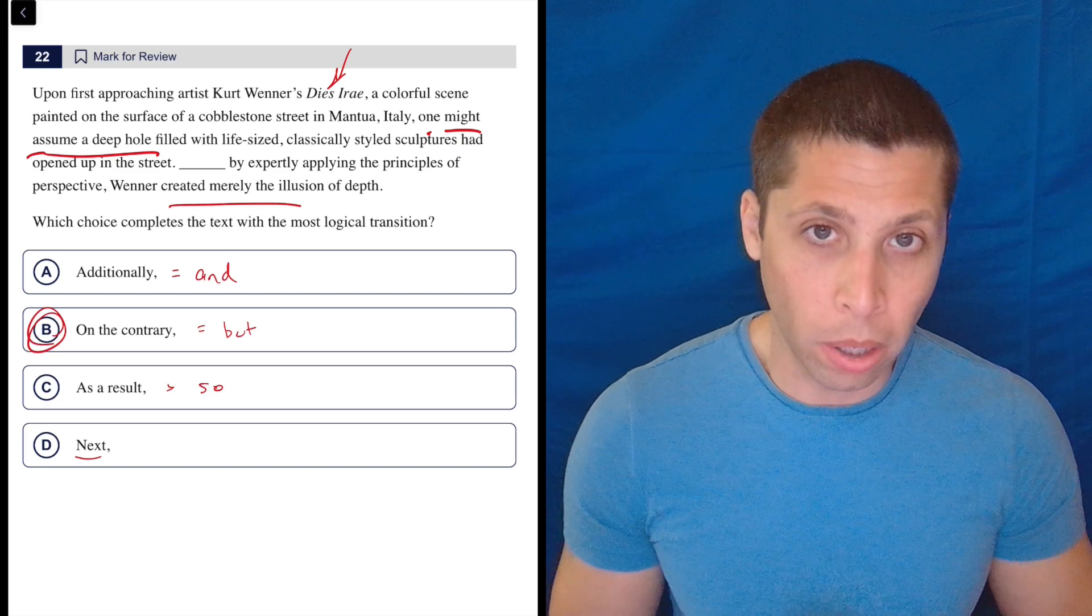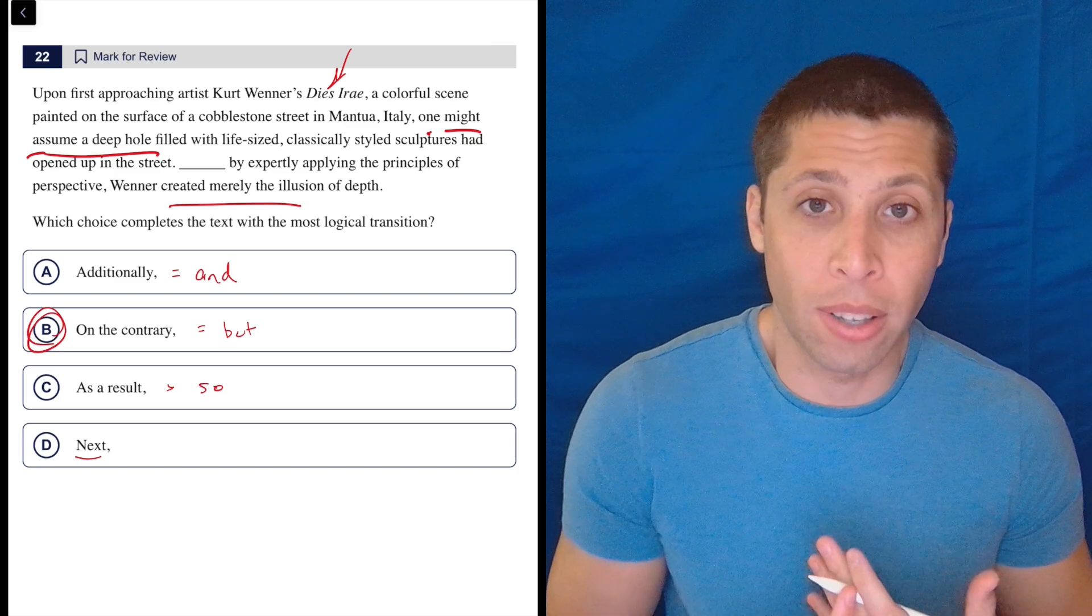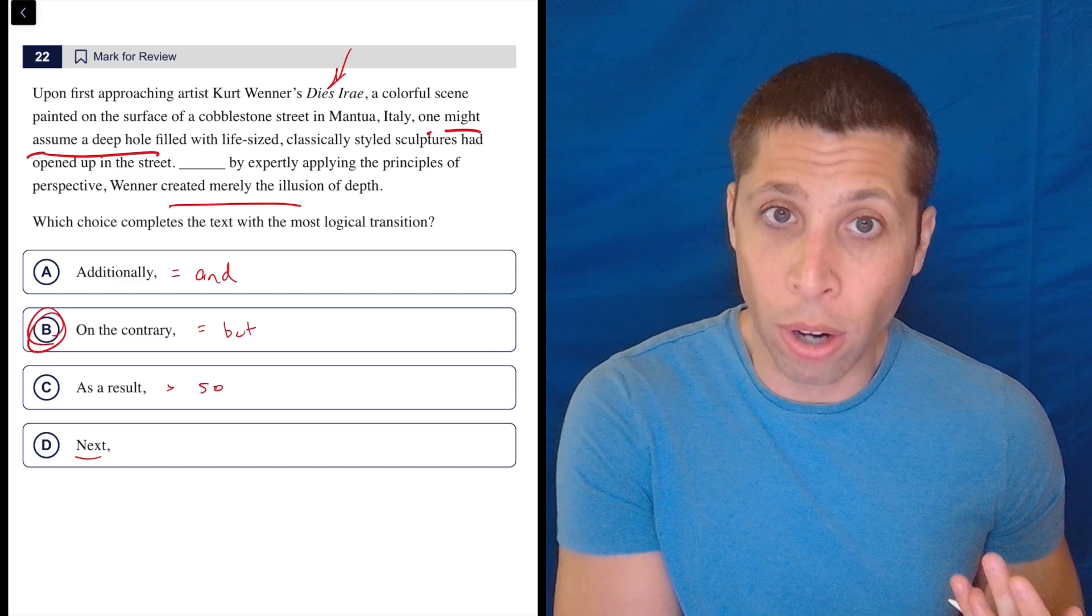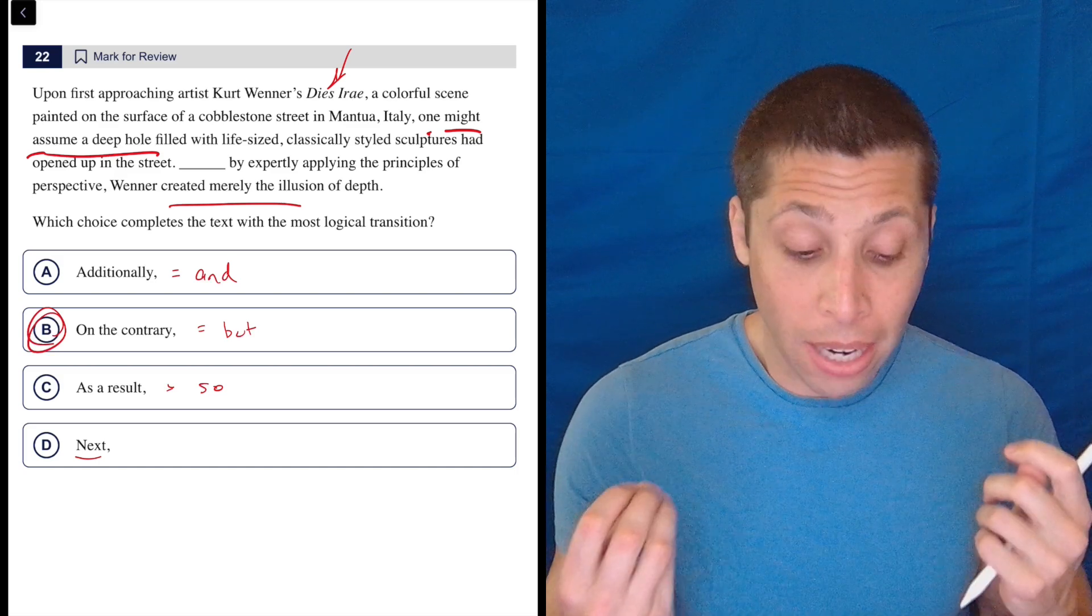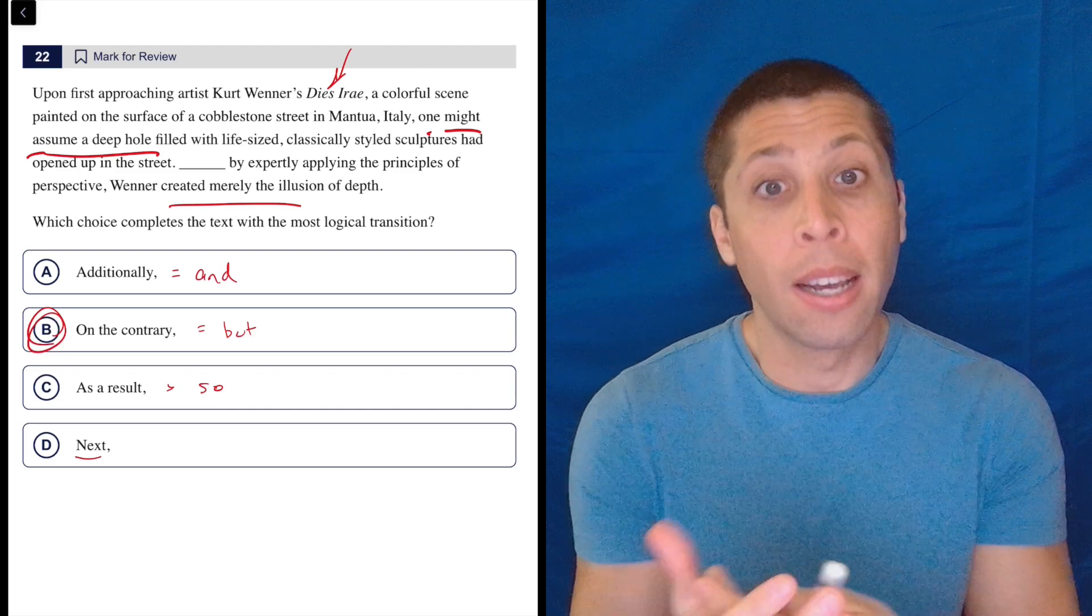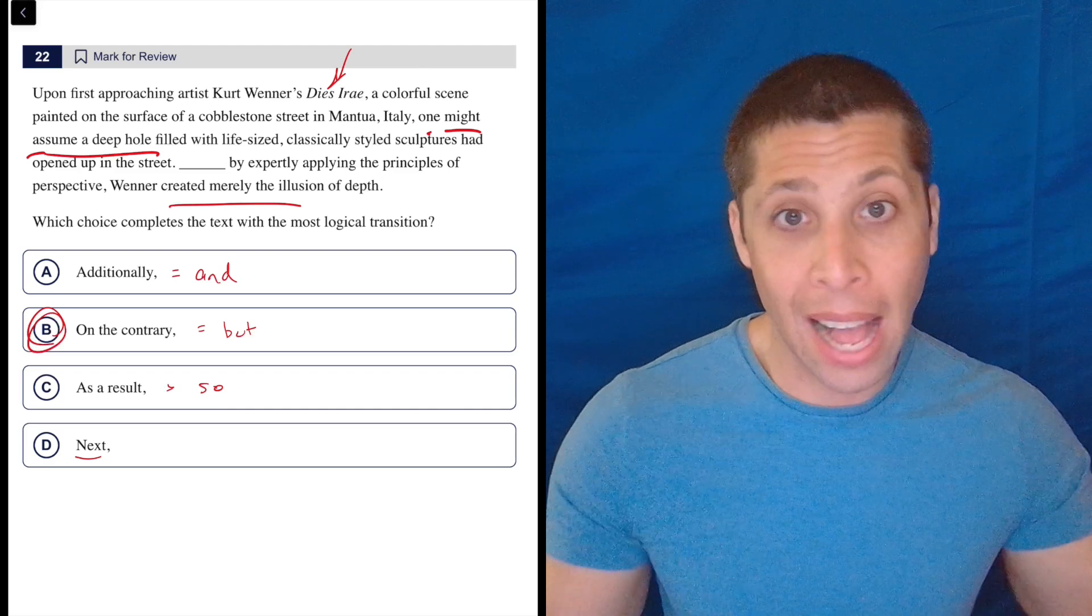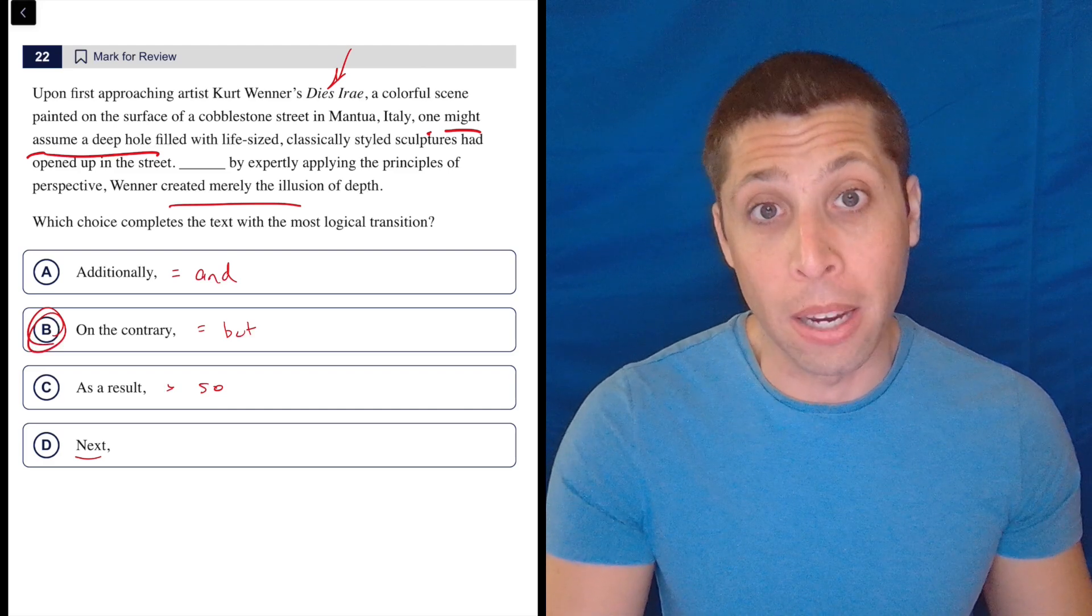So notice the strong words. This is not necessarily a positive and negative contrast. I don't think these ideas have some sort of connotation to them, but I do think we can notice the strong pieces - that we might assume one thing, but it's actually something else. That's the sentence in a nutshell, and it's really obvious then that we need the 'but' word, choice B here.